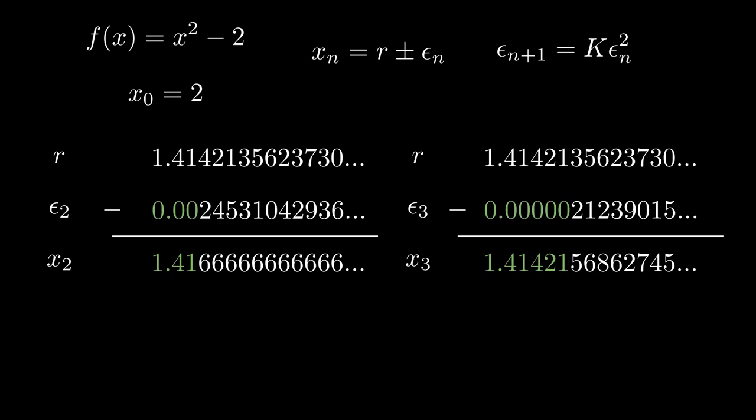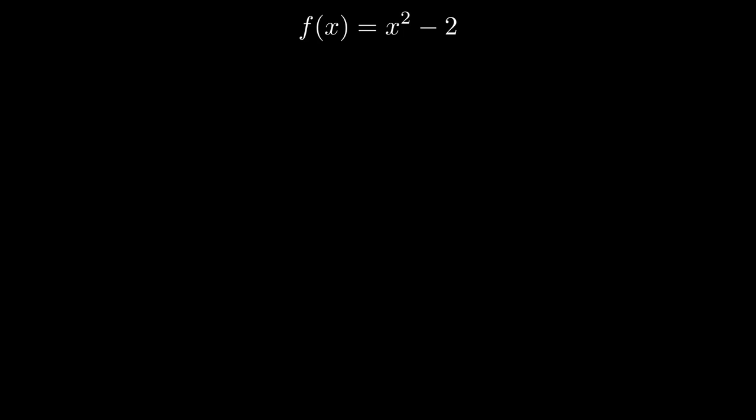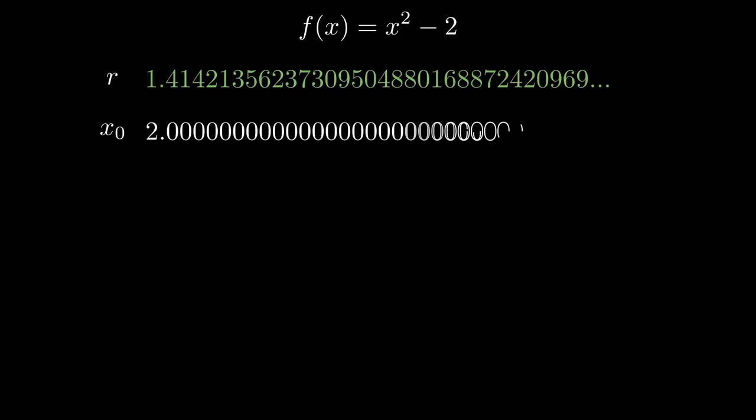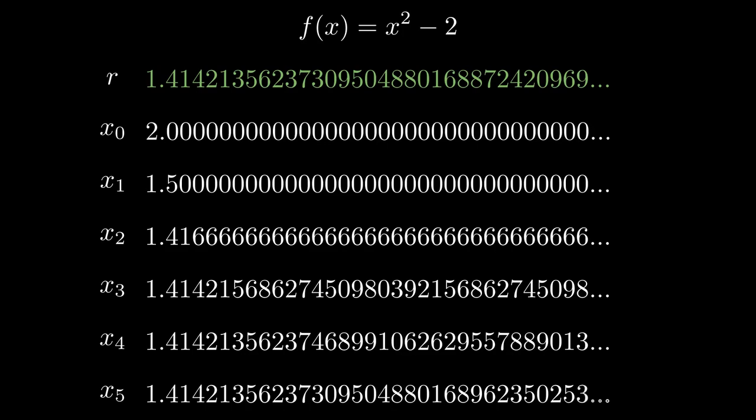In this video, I want to point out a pattern I noticed when I programmed the method to collect some data. I'll just use one example for the sake of simplicity, with the function x squared minus 2, and the initial guess x0 equals 2. Here's the data I collected. At the top, we have r, one of the actual roots of the function, which is obviously the square root of 2, 1.414, and so on.